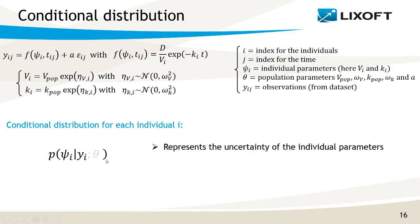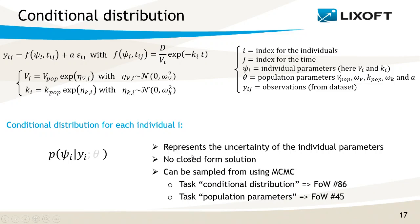As a reminder, this conditional distribution is defined for each individual i and represents the uncertainty of the individual parameters. The individual parameters are vectors — here vi and ki — so it is a multivariate distribution. This probability distribution has no closed-form solution. The only way we can approach it is to sample from it using a Markov chain Monte Carlo procedure. This is what we do in the task conditional distribution, as explained in feature of the week number 86, and also during the SAEM algorithm with the current population parameter estimate theta k — see video 45 for this.